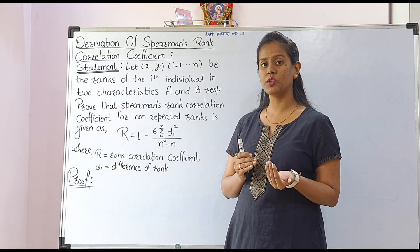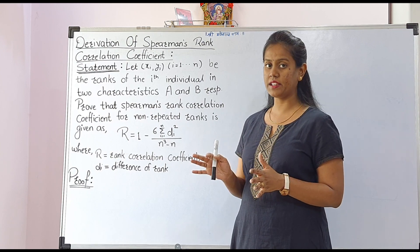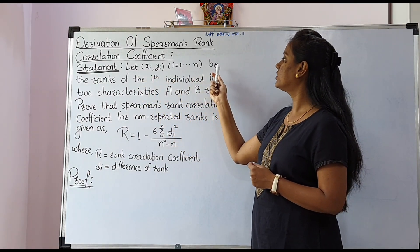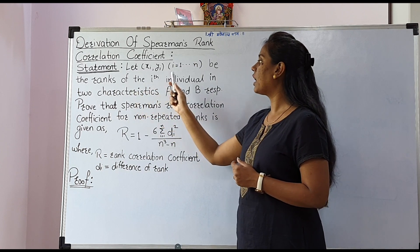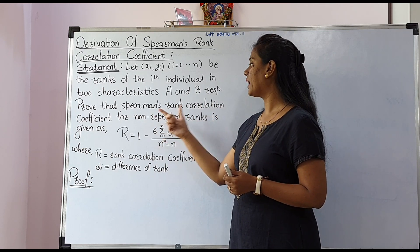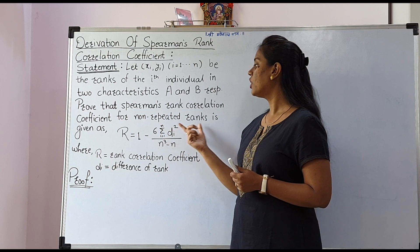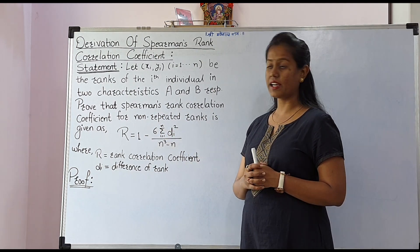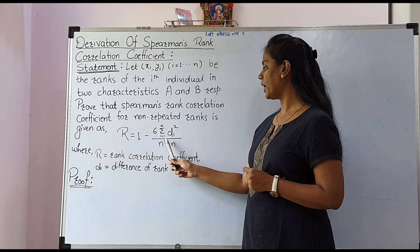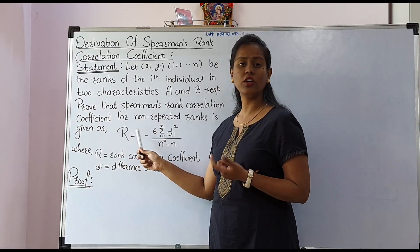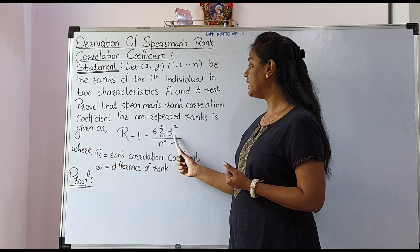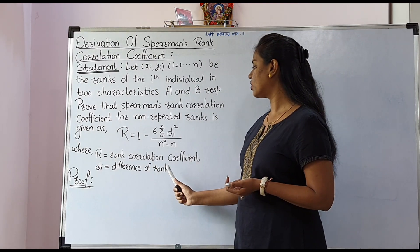Here we will derive the formula for non-repeated ranking. The statement is given as: let xᵢ, yᵢ (i ranging from 1 to n) be the ranks of the i-th individual in two characteristics A and B respectively. Prove that Spearman's rank correlation coefficient for non-repeated rank is given as r = 1 − 6·Σdᵢ² / (n³ − n), where R is the rank correlation coefficient and dᵢ is defined as the difference of ranks.